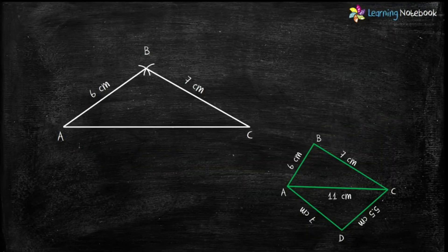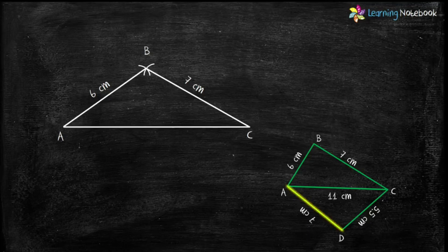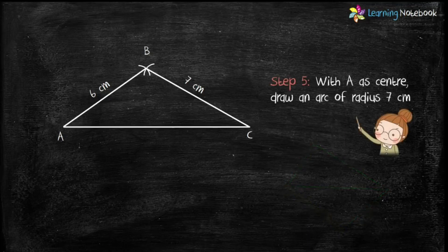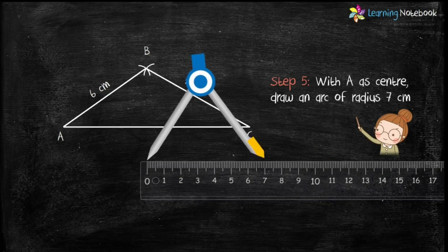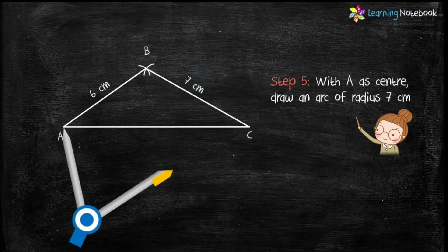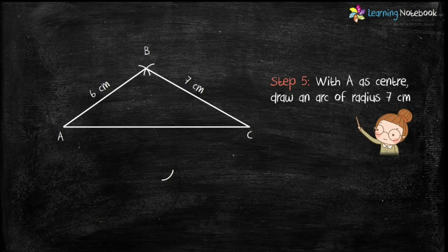Now, let's construct AD which is given as 7 cm. So, students, for step 5, open the compass with radius 7 cm and with A as center, draw an arc as shown here.